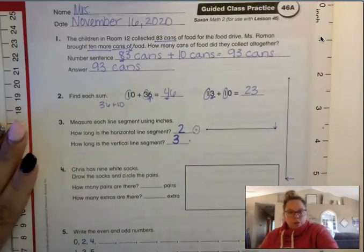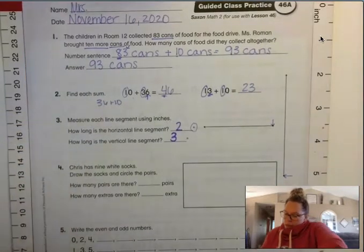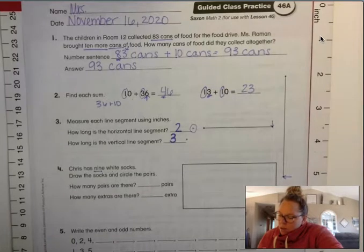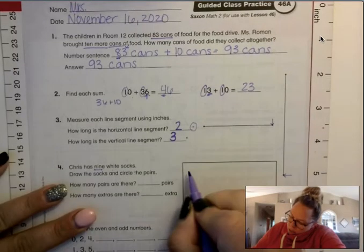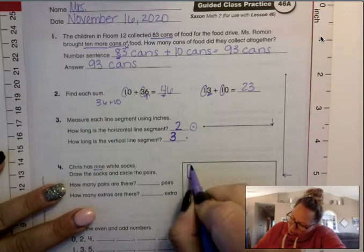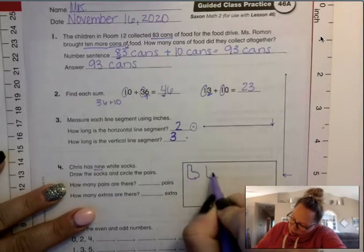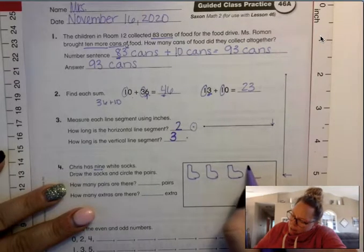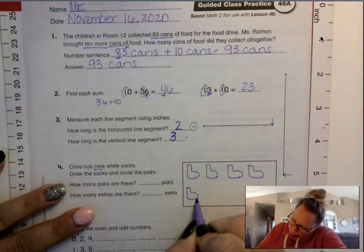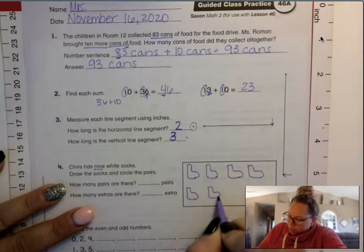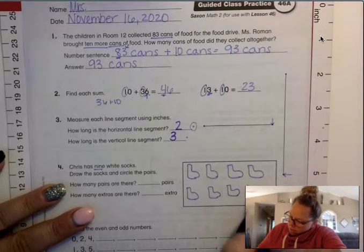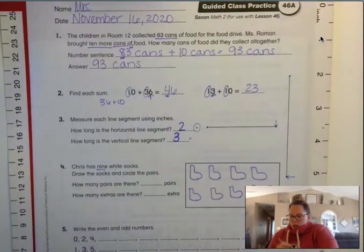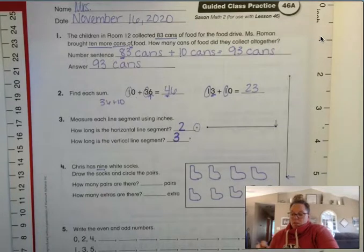We're going to look at number 4. It says, Chris has 9 white socks. Draw the socks and circle the pairs. I'm not doing anything fancy, they kind of just look a little funny. I'm drawing 9 socks. It's okay if they're different sizes.